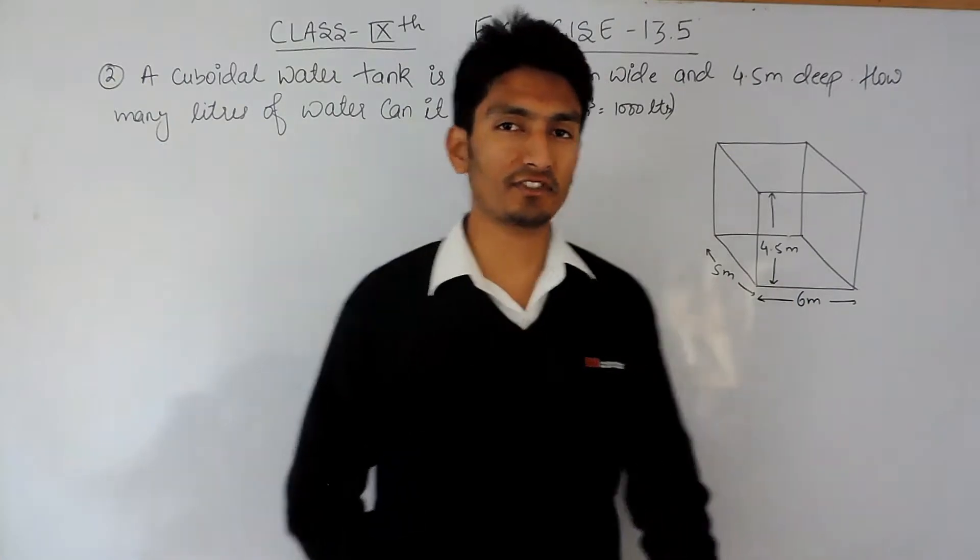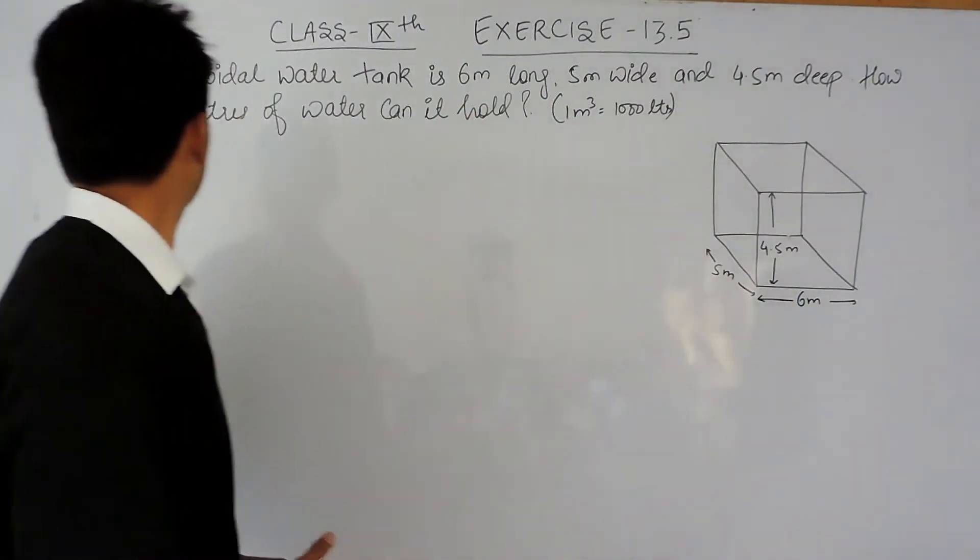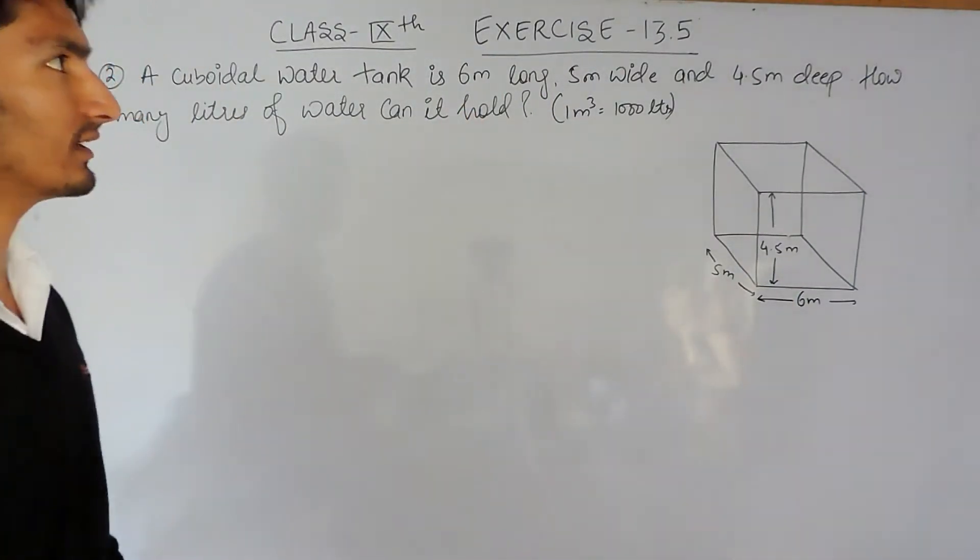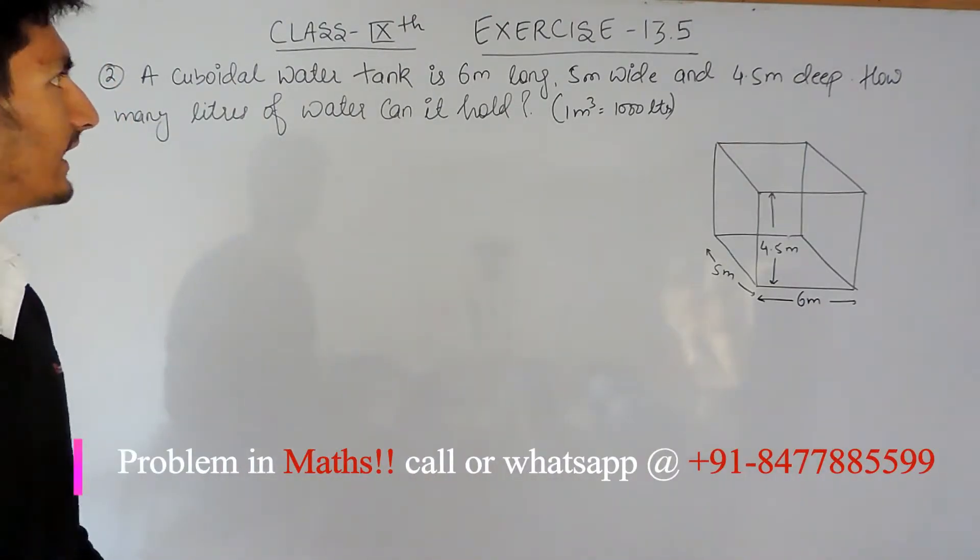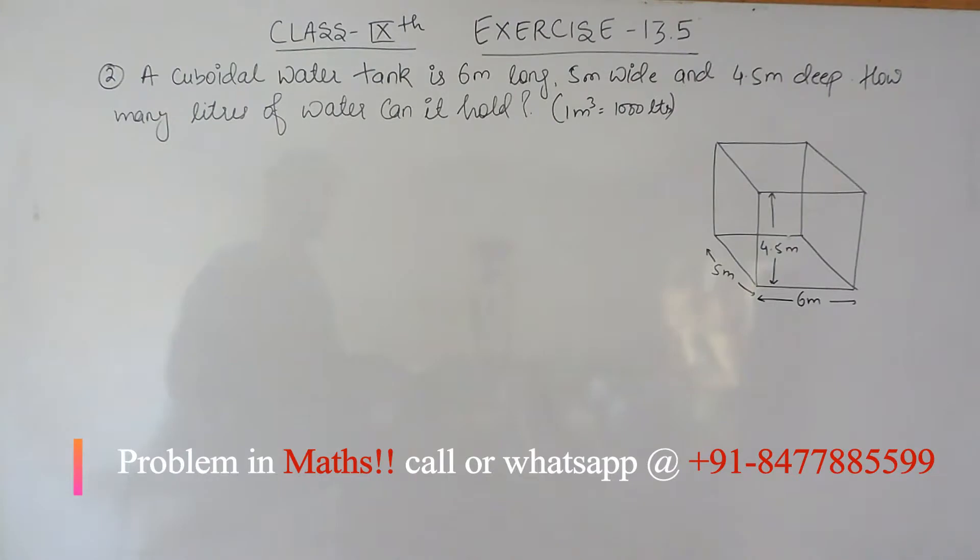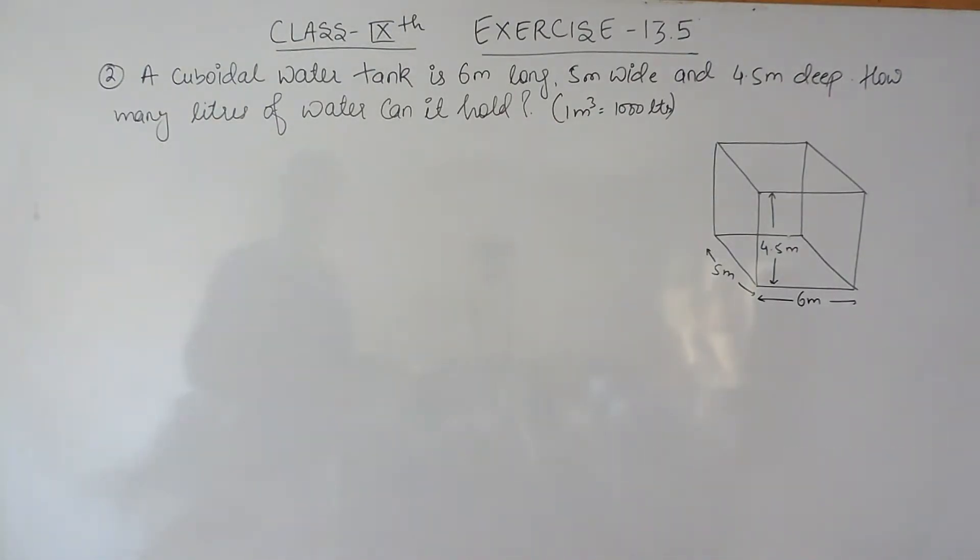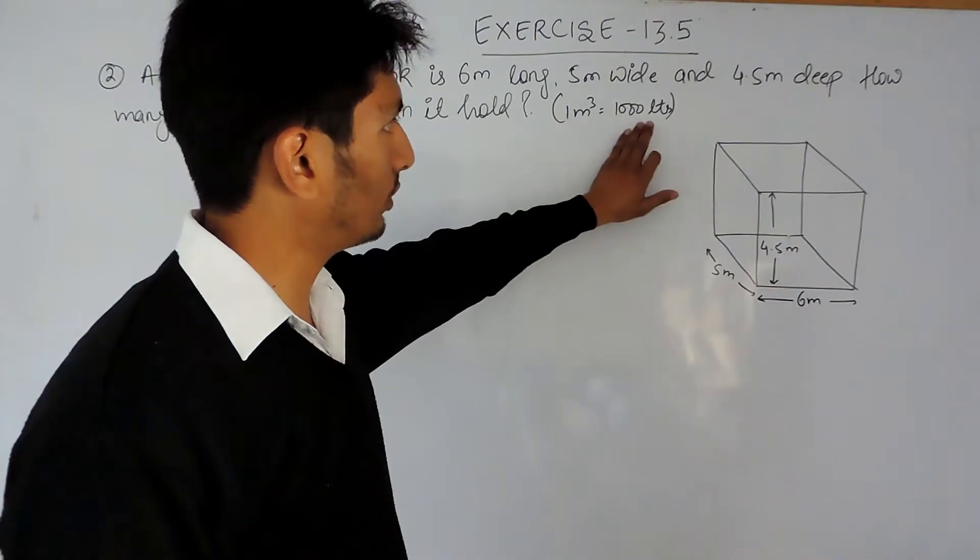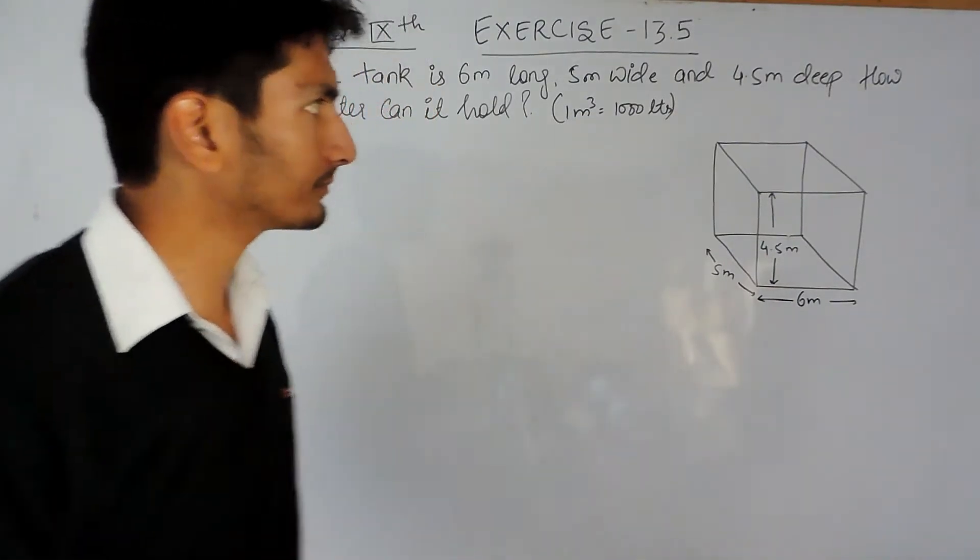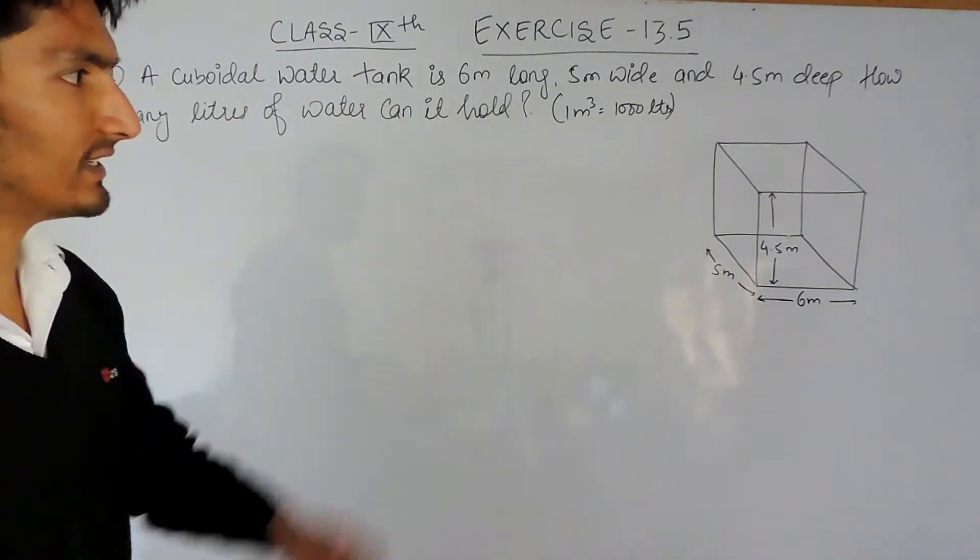Hello everyone, in this video we are going to solve question number 2 of Exercise 13.5. The question says: A cuboidal water tank is 6 meters long, 5 meters wide, and 4.5 meters deep. How many liters of water can it hold when 1 meter cube can hold 1000 liters? Obviously, this is a cuboid.